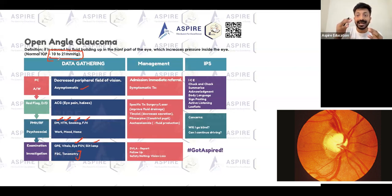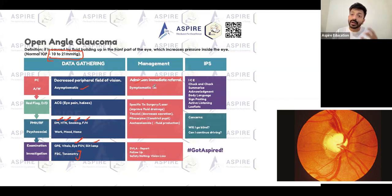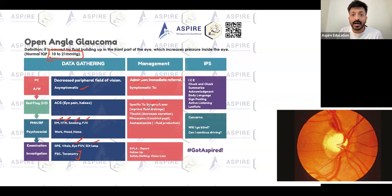In tonometry the pressure IOP may or may not be high. The first step is immediate referral, because we need to treat this patient as soon as possible to prevent future problems. Regarding symptomatic treatment, as the patient may have no symptoms at all, there may not be much to do symptomatically. For specific treatment in open angle glaucoma, it's going to be surgery or laser treatment to decrease the pressure inside the eye.